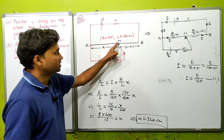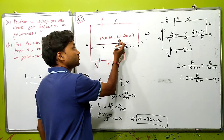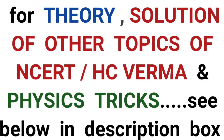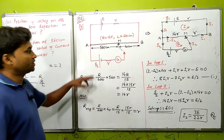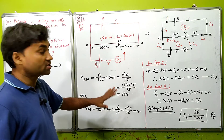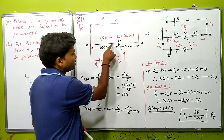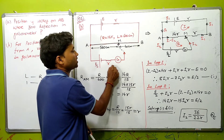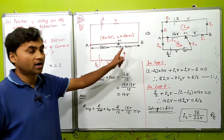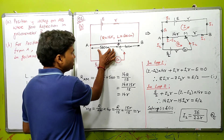So the answer to Part A is that at 320 cm from point A, connecting the jockey gives zero current flow through the galvanometer. The total wire is 600 cm, and 320 cm is the balance point. Now for Part B: if the jockey touches the wire at a distance of 560 cm from A, what current will flow through the galvanometer?